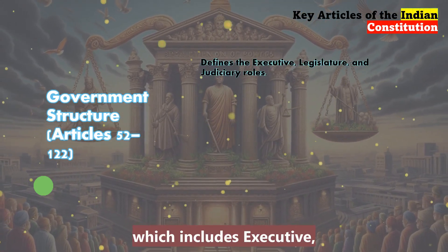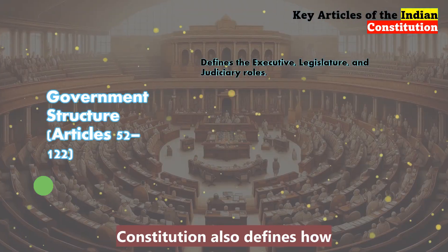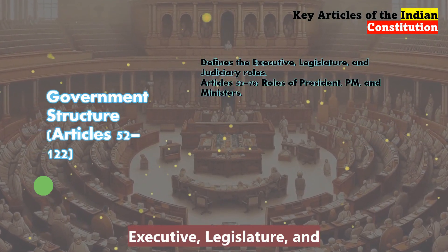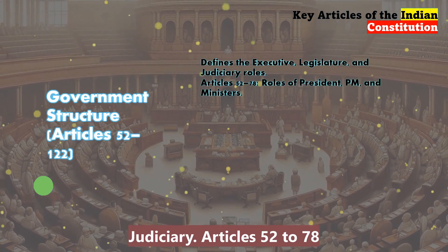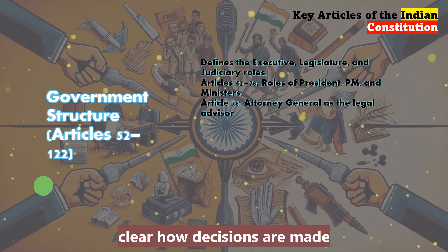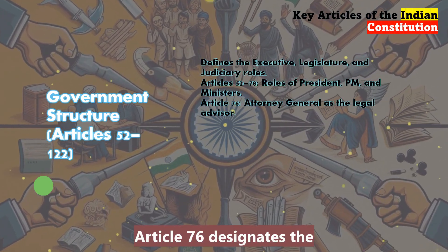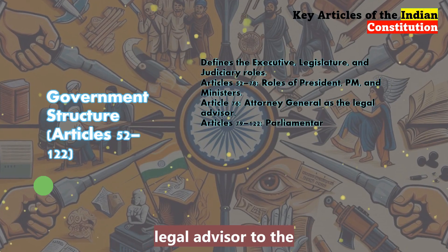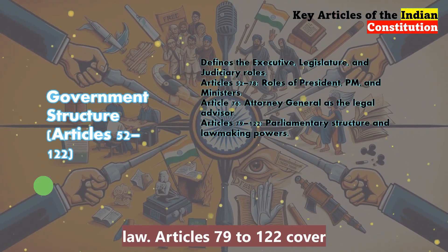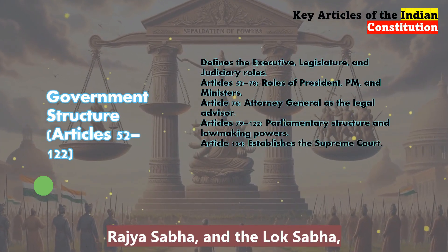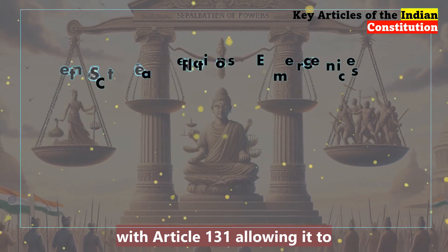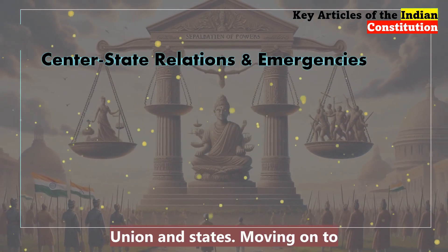Next is the structure of government, which includes the executive, legislature, and judiciary. The Constitution defines how the government is structured, covering roles and responsibilities within each branch. Articles 52 to 78 outline the powers of the President, Prime Minister, and Council of Ministers, making it clear how decisions are made and who holds accountability. Article 76 designates the Attorney General as the primary legal advisor to the government, ensuring that all major actions align with the law. Articles 79 to 120 cover the powers of Parliament — the Rajya Sabha and the Lok Sabha — setting up a framework for lawmaking. Article 124 establishes the Supreme Court, with Article 131 allowing it to resolve disputes between the union and states.